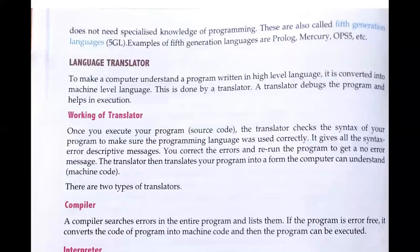If we are not using deep specialized knowledge of programming, we do not need to learn deep programming languages. Examples of fifth generation languages include Prolog, Mercury, and OPS5 — these are languages that do not need any predefined knowledge of programming.